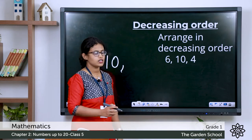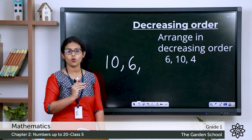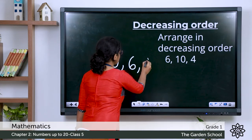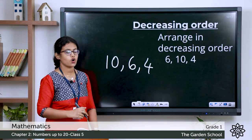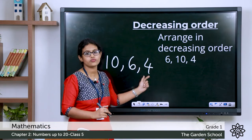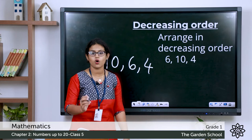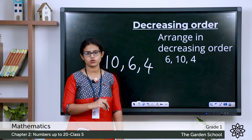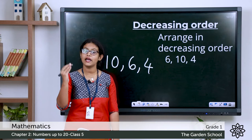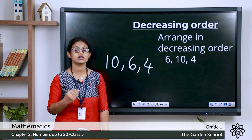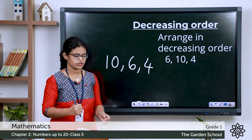So let's write 6. Then 5, 4 — so 4 is here. The correct order is 10, 6, 4. It starts with the larger number 10 and ends with the smaller number 4. So this is decreasing order — when you arrange numbers from largest to smallest, it is called decreasing order or descending order.